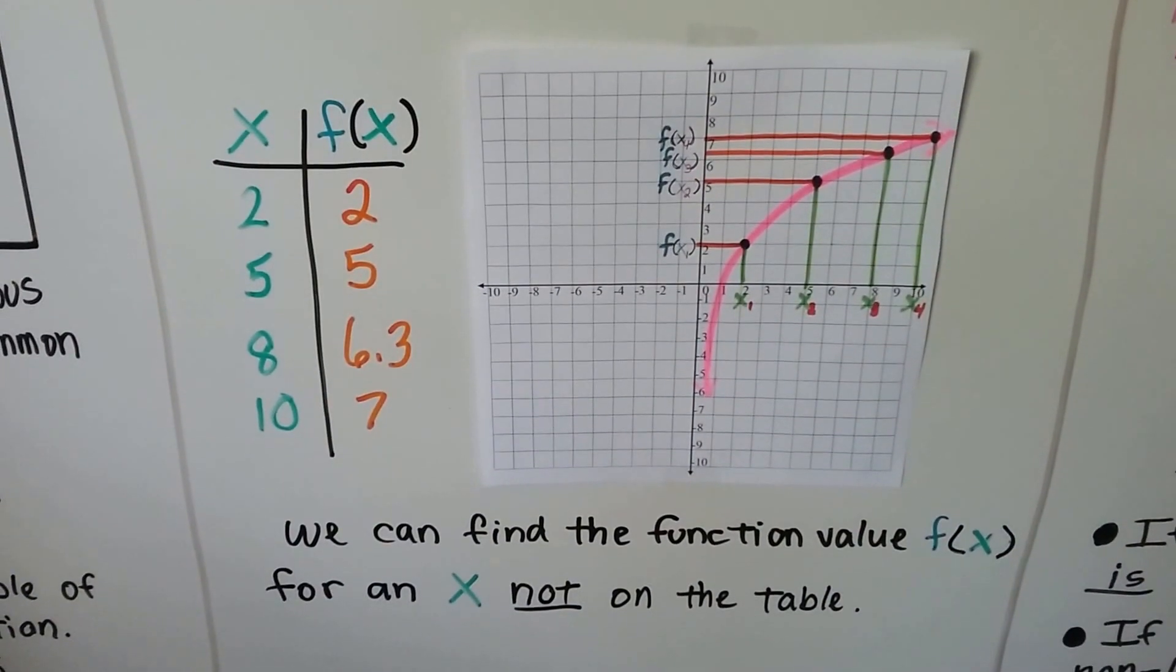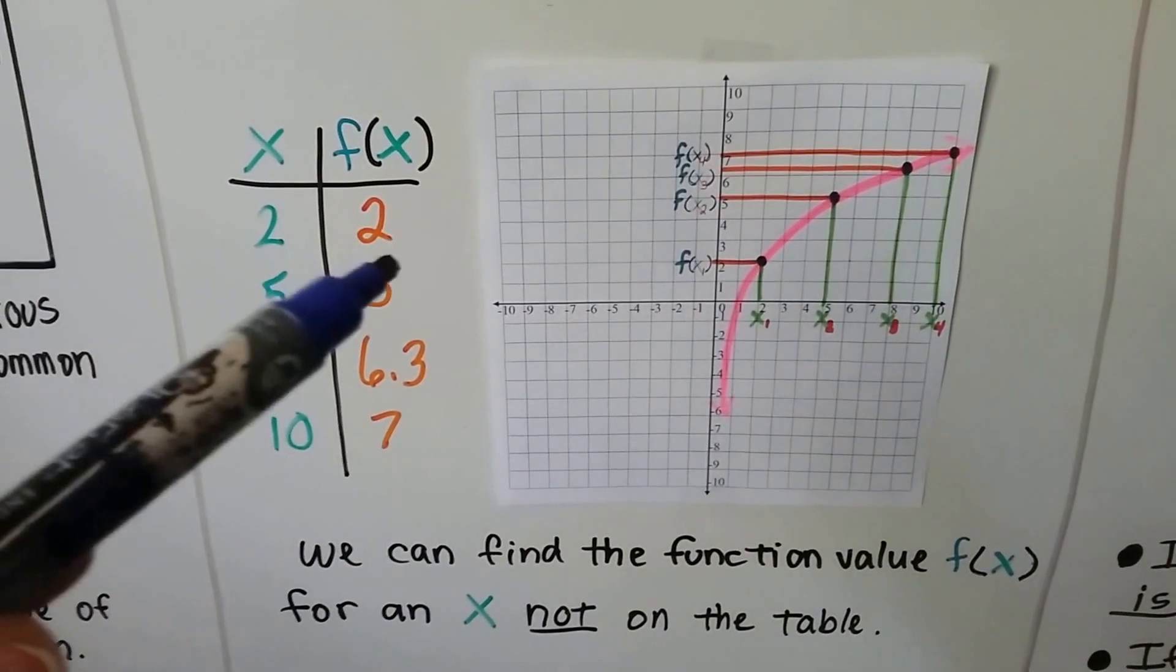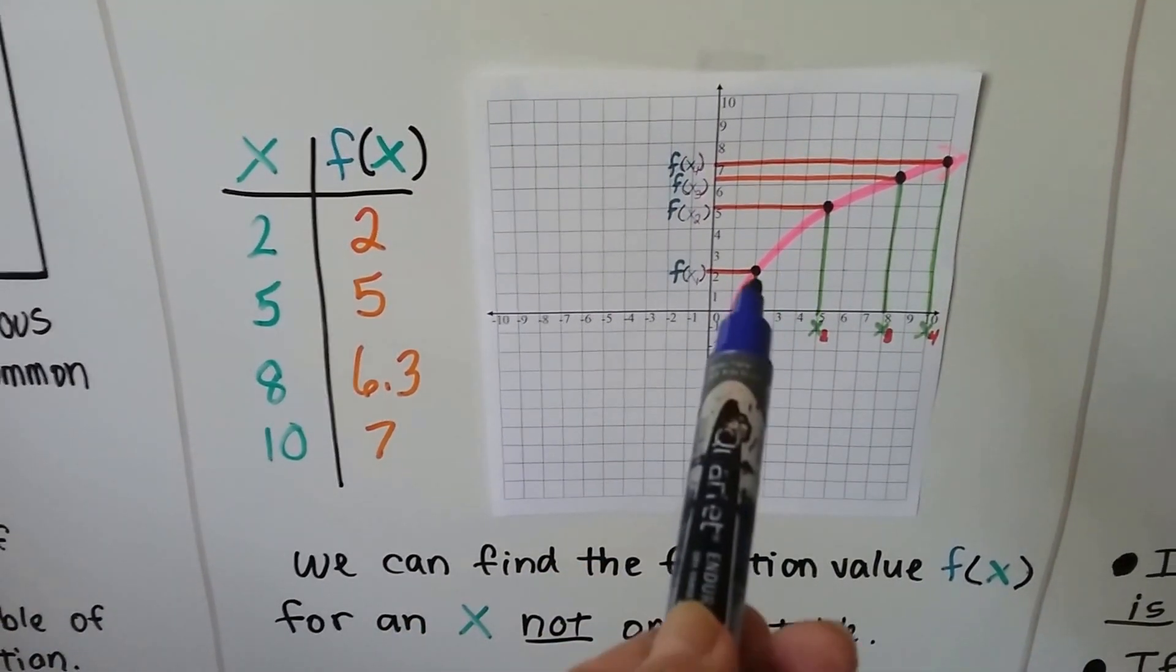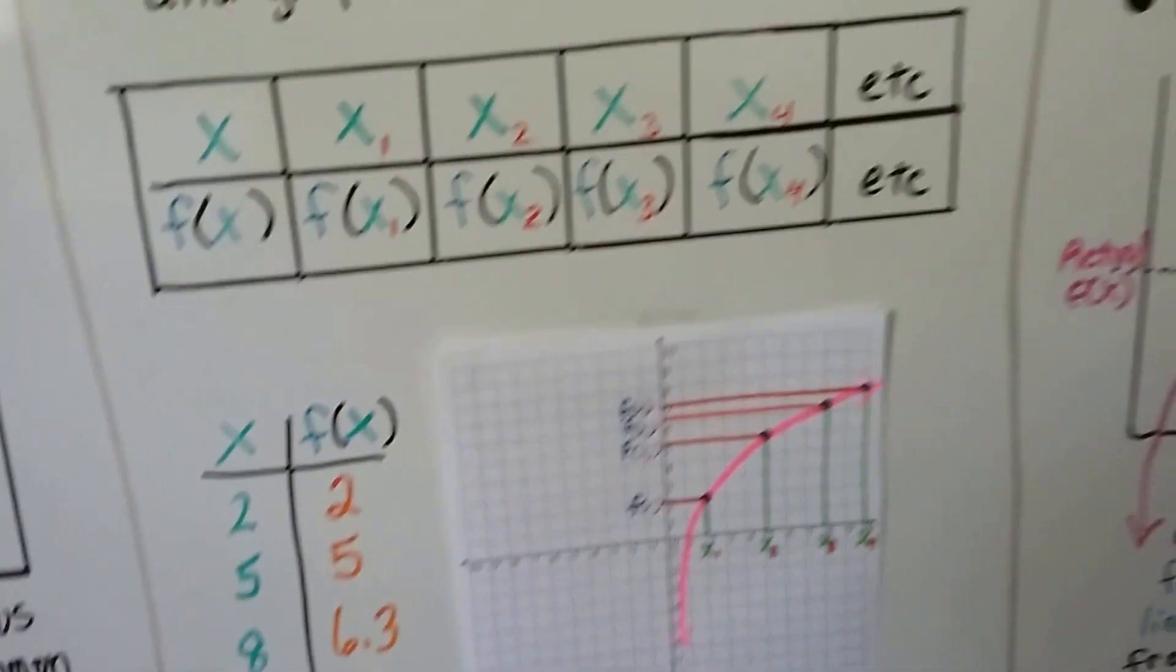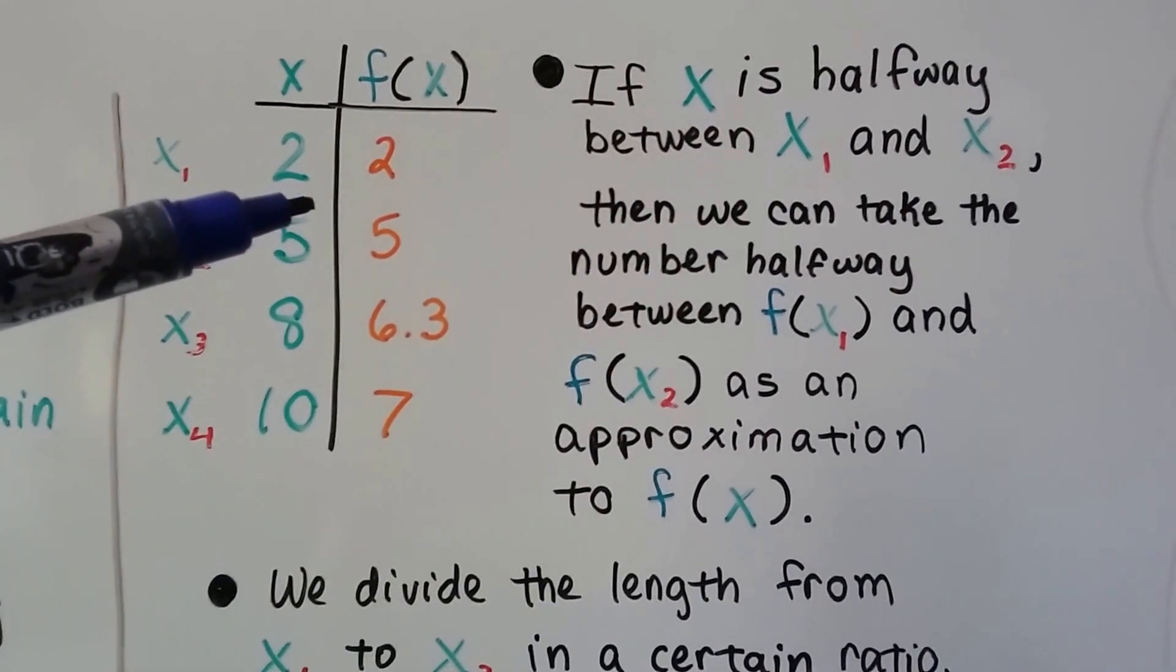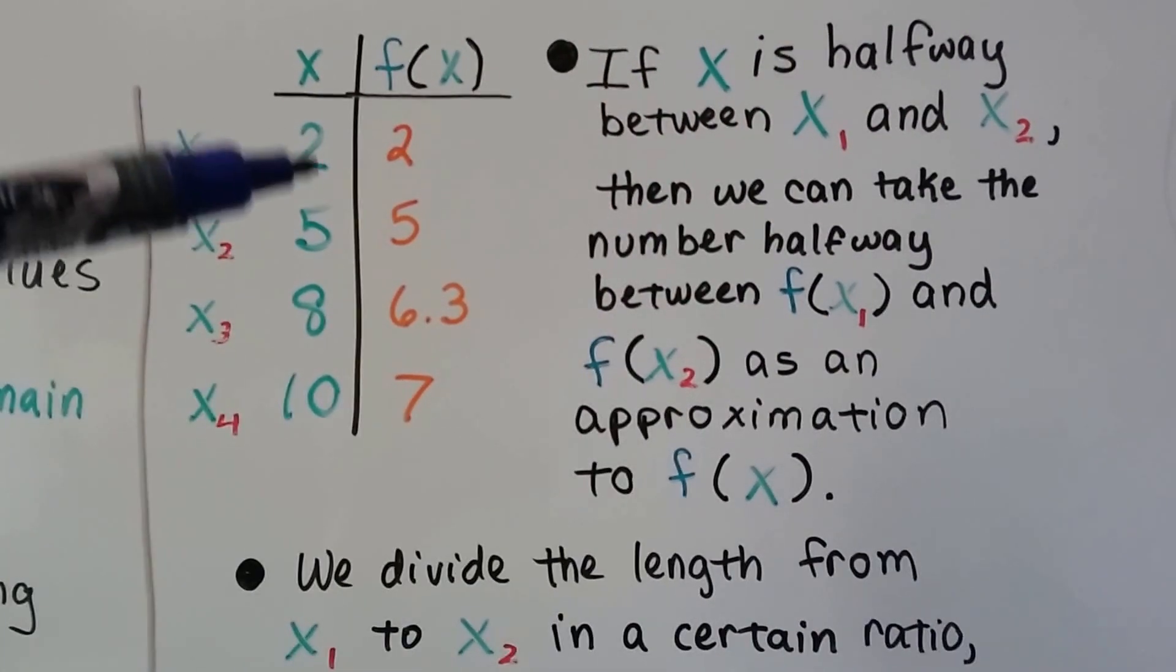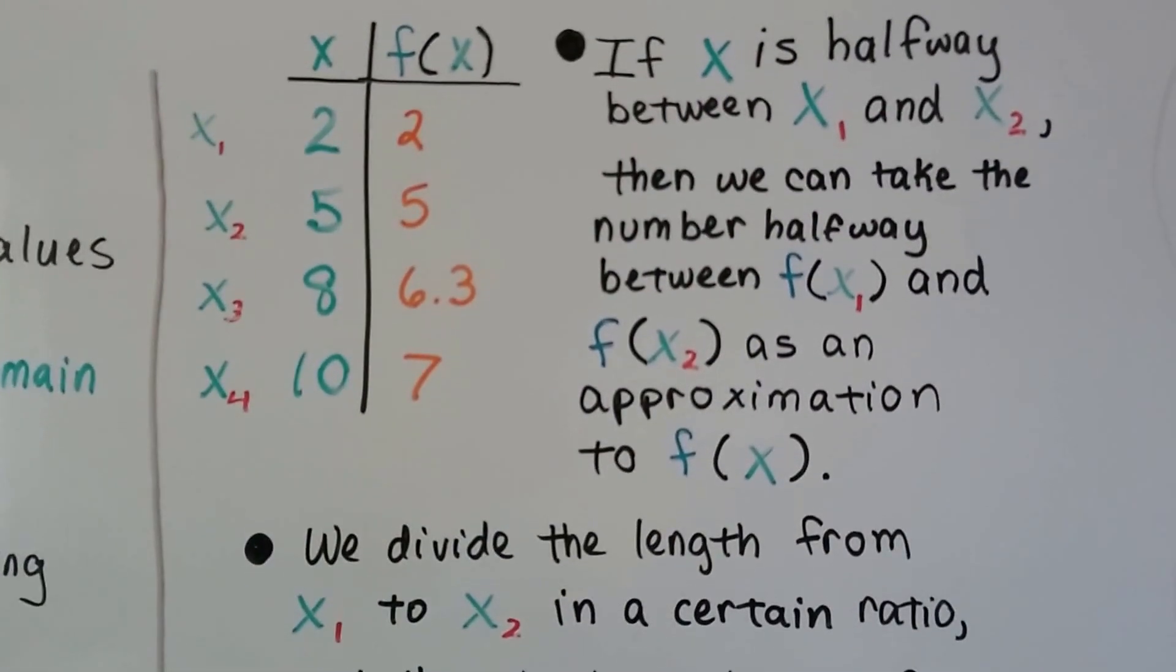We can find the function value f of x for an x that's not on the table. If we wanted to find something in between the 2 and the 5 here, we can pretty much tell that if we wanted to find the center point right here in between this 2 and this 5, we could find the halfway point.